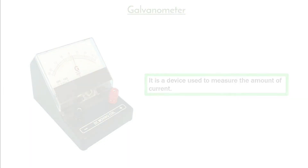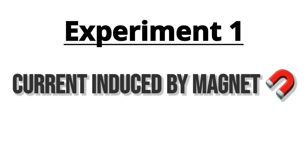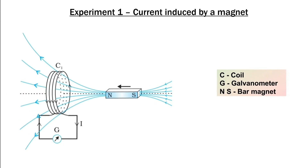Now let's move to experiment number one, that is current induced by a magnet. In this experiment they considered a coil (C), a galvanometer (G), and a bar magnet which has two poles — north and south. To understand this experiment we will make a table.